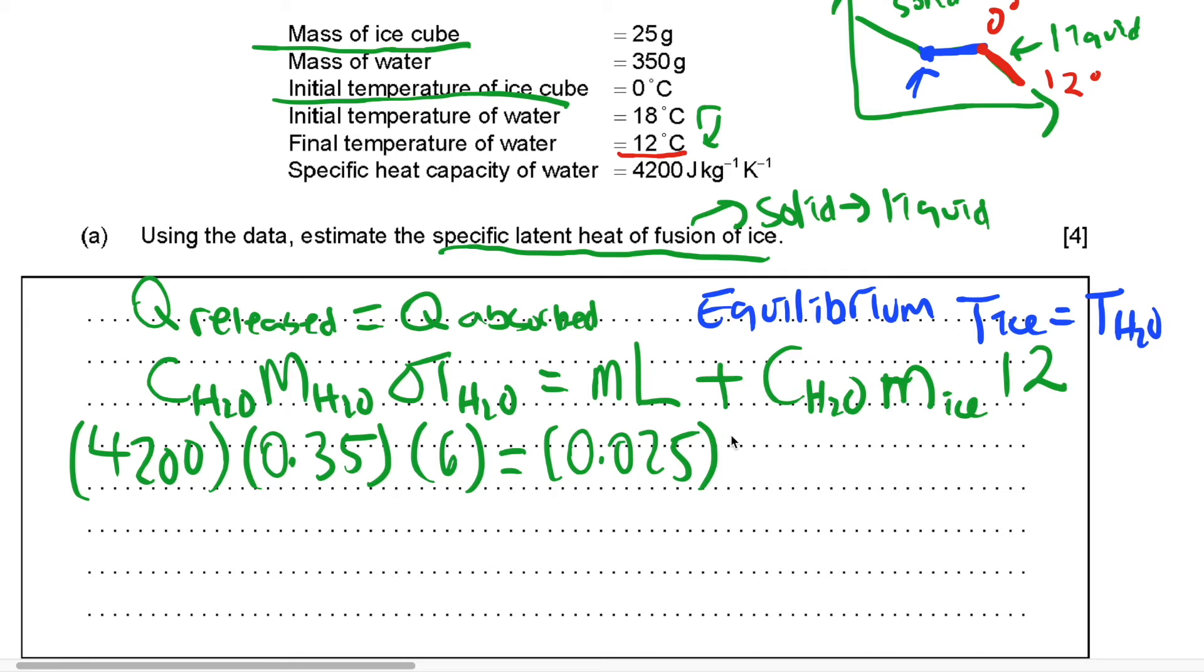Divided by 1000, multiplied by the specific latent heat, plus 4200 multiplied by the mass of the ice cube again, which is equal to 0.025 kilograms, multiplied by their change in temperature. And you're going to have an answer of 3.02 multiplied by 10 to the power of 5. So this is the answer for this problem.